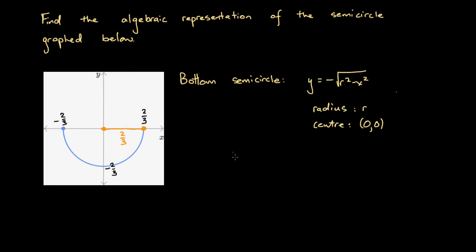So here we have a bottom semicircle, and we have a radius of 2 over 3, and we also have a center of 0, 0.